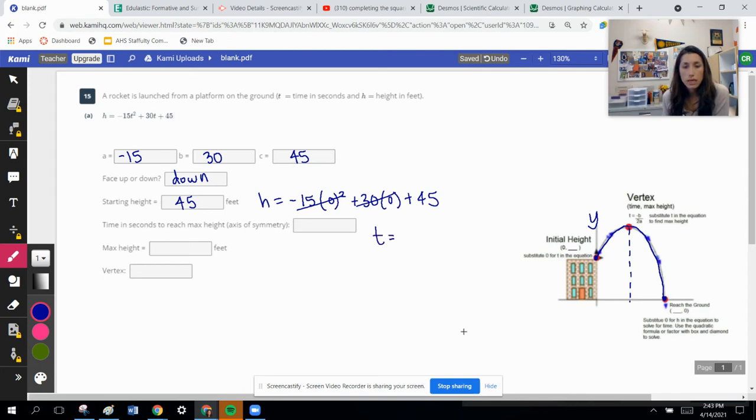Let's do time is equal to negative b over 2 times a. Well, we identified b is 30, and a is negative 15. So if we simplify this, it would be t is negative 30. That's our numerator, and our denominator is also negative 30. When we divide these, we get one. So time in seconds to reach the maximum height, our time is one. That's our axis of symmetry.